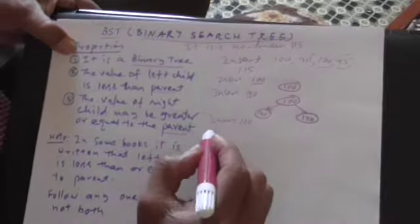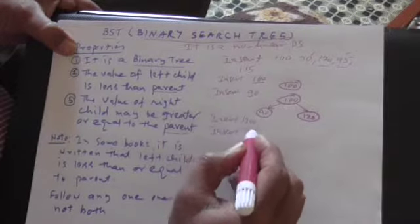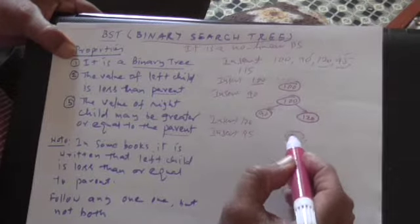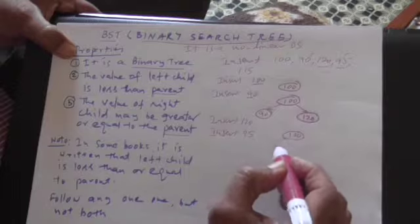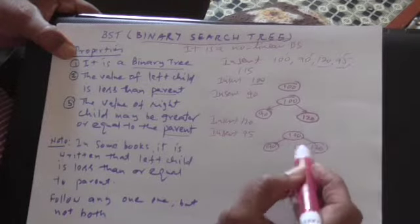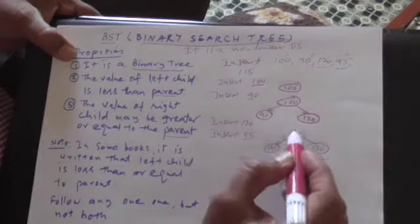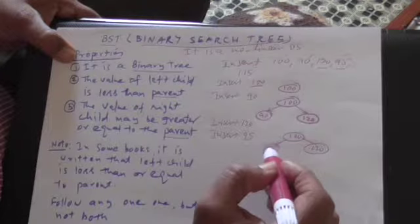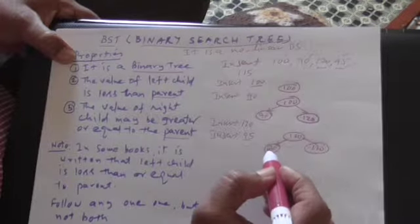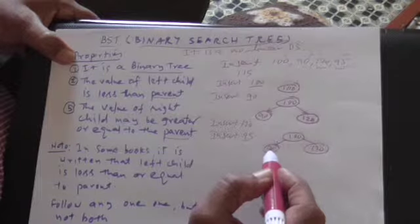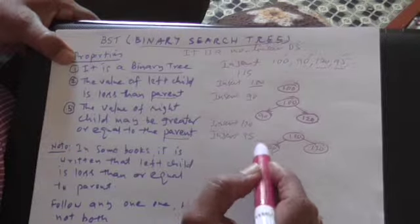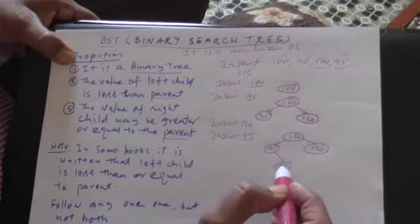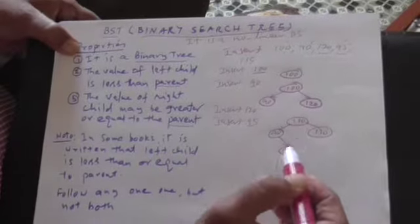Then I insert 95. You always start at the root — on the left side you have 90, right side you have 120. To insert 95, I start at the root. 95 is less than 100, therefore I move to the left side. Now the value present on the left side is 90, but the value to be inserted is 95, therefore it has to be on the right side only. So I insert a node here and put 95.